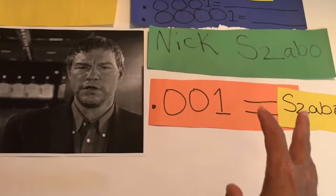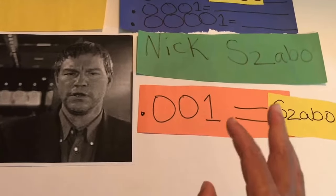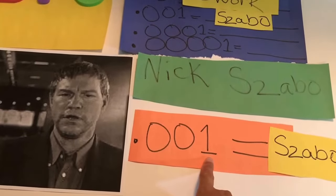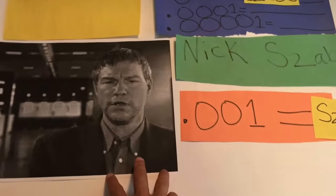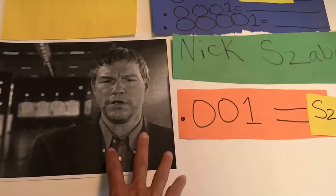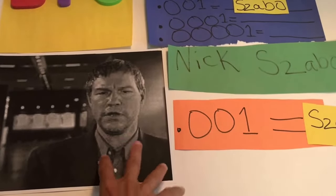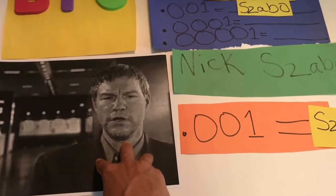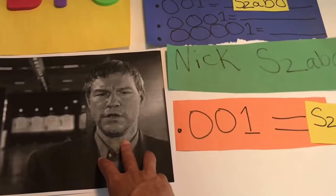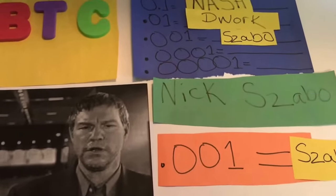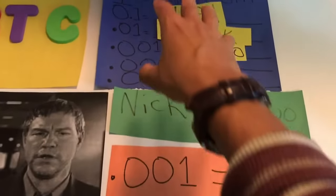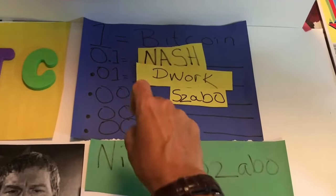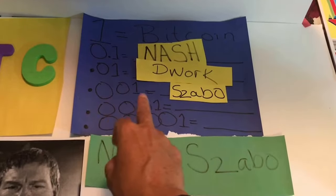For his contributions to the Bitcoin community and computer science in general, I designated the third denomination to Nick Szabo. As a side note, some people think Szabo is actually Satoshi Nakamoto — there's no proof, but speculation exists because the language of the Bitcoin white paper mirrors ideas and concepts Szabo used, and his name is cited in the original white paper. So: 0.001 BTC equals one Zabo.